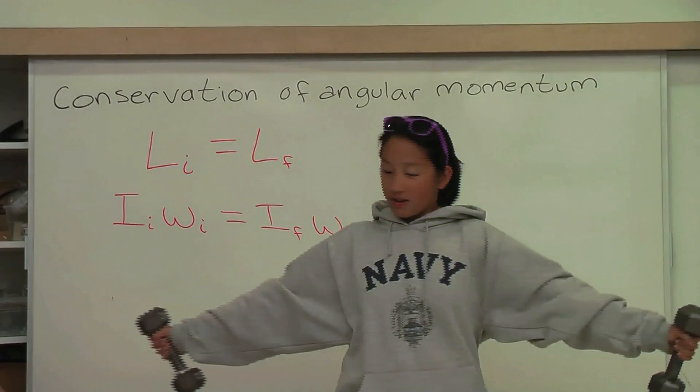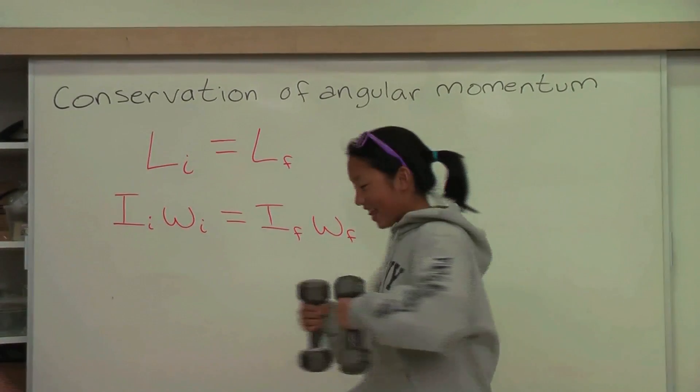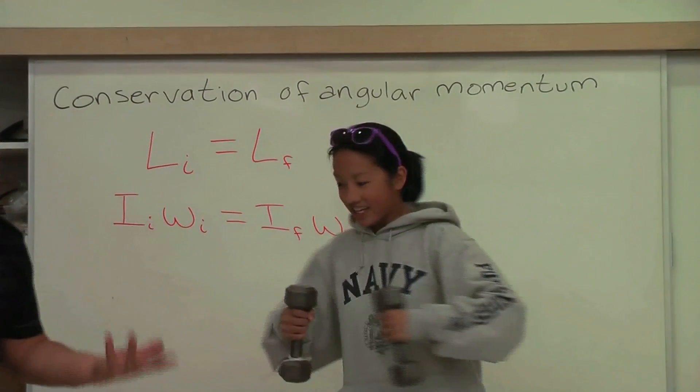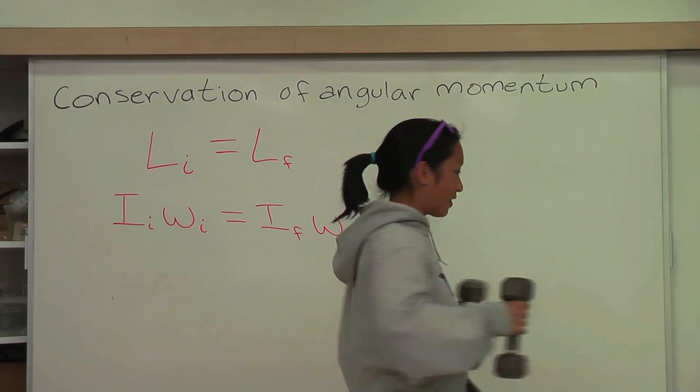Nicole, is that the fastest you can spin? She's going faster now. She just increased her angular velocity, and then she just slowed it down. How is she doing this?